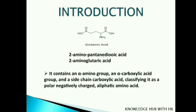Let me give a brief introduction to glutamic acid. It is considered as 2-amino pentanedioic acid, or 2-amino glutaric acid. It contains an alpha amino group, an alpha carboxylic group, and a side chain carboxylic group. It is classified as a polar, negatively charged, aliphatic amino acid. It is non-essential in humans, meaning the body can synthesize it.